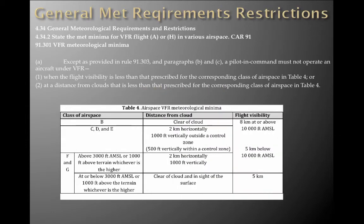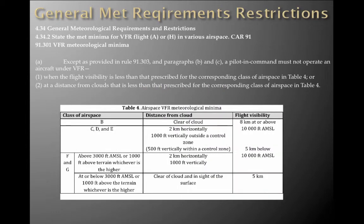So let's kick in. Under 4.34, we are expected to understand and know general meteorological requirements and restrictions. Under 4.34.2, we need to be able to state the met minimas for VFR flight — fixed-wing or helicopter — in various airspaces under CAR 91. And under CAR 91.301, we come to the VFR meteorological minimas.